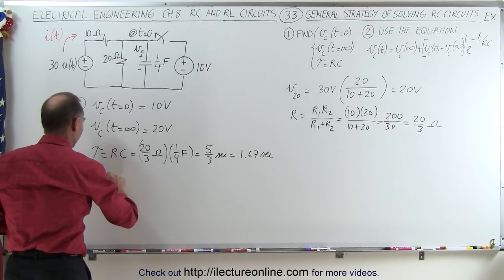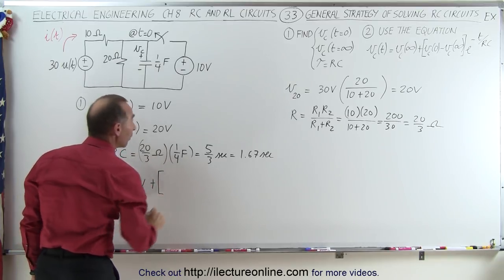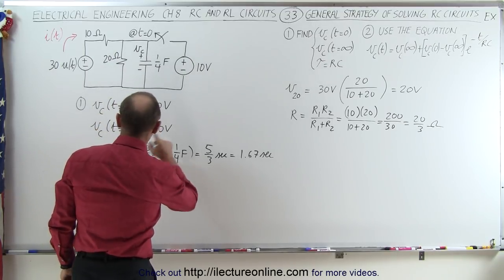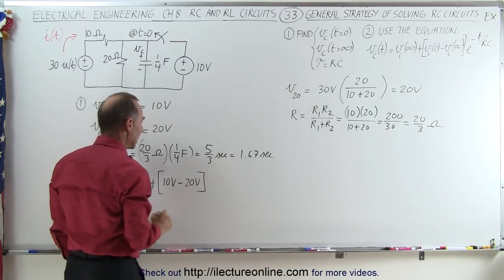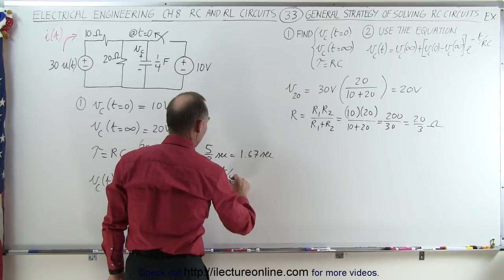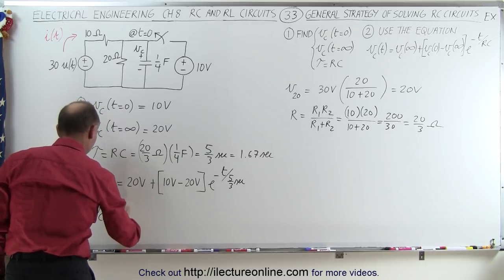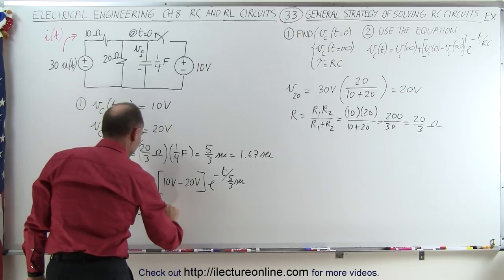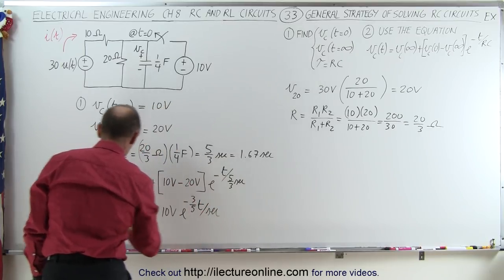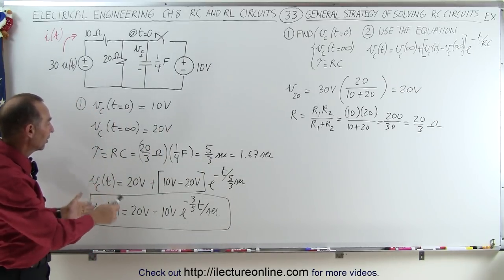The voltage across the capacitor as a function of time equals the voltage at infinite time, which is 20 volts, plus the difference of the initial voltage — 10 volts — minus the voltage at infinity — 20 volts — times e to the minus t over tau. With tau equal to 5 thirds of a second, this simplifies to: V(t) equals 20 volts minus 10 volts times e to the minus 3 over 5 times t, and that is the equation for the voltage across the capacitor as a function of time.